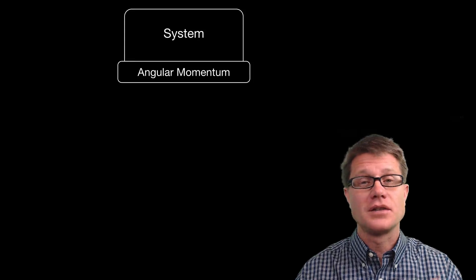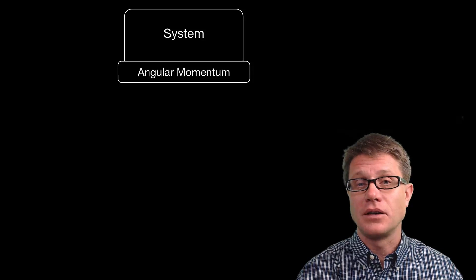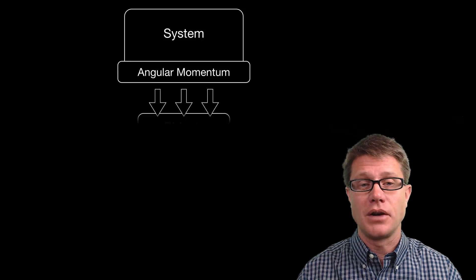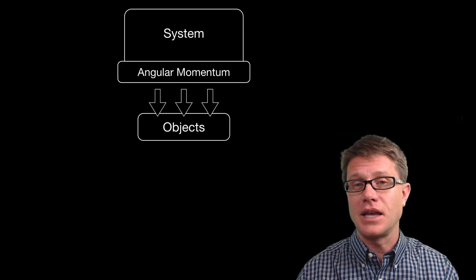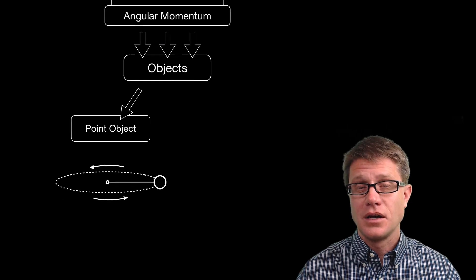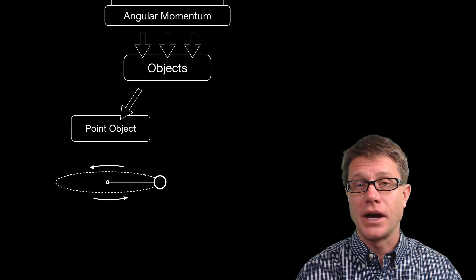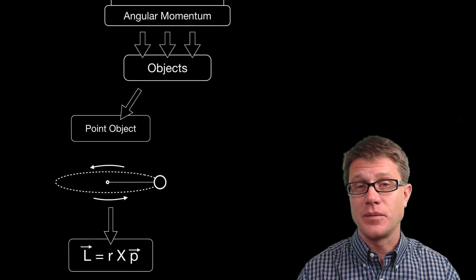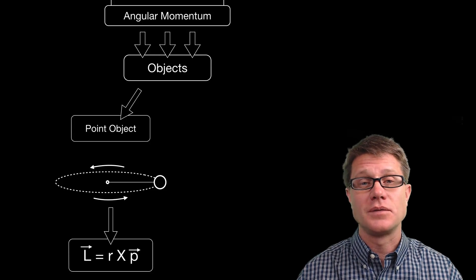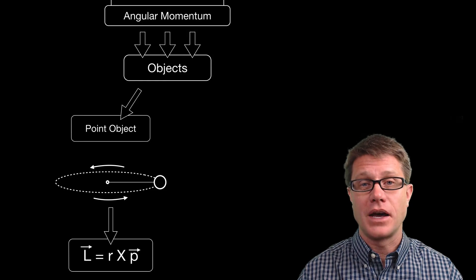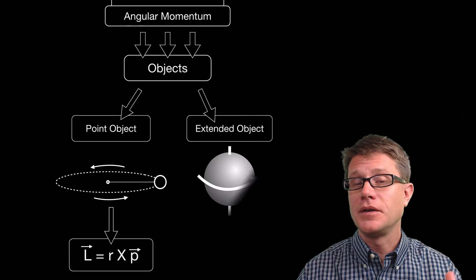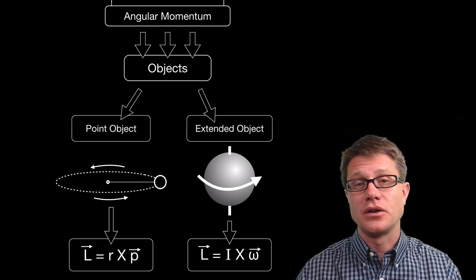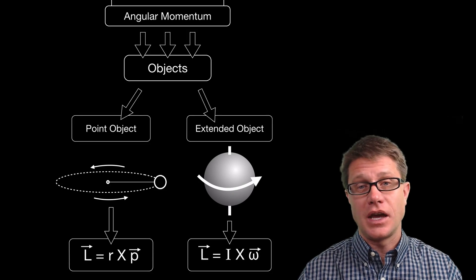If a system has objects inside it that are in motion, it's going to have angular momentum. To figure out the angular momentum of the entire system, all you have to do is figure out the angular momentum of all the objects inside that system. For point objects, like a ball revolving on a string, all you do is take the radius — the distance from the center to the object — and multiply that times the momentum of that object, which is mass times velocity. For an extended object, all you do is multiply its rotational inertia times its angular velocity.